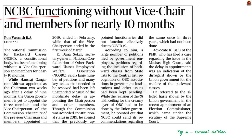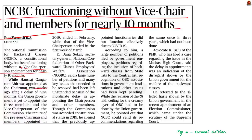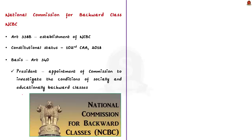The next news article mentions that the National Commission for Backward Classes (NCBC) has been functioning without a vice chairperson and members for nearly 10 months, and the chairman was appointed only two weeks ago after a delay of nine months. In context, when we talk about the National Commission for Scheduled Castes we have Article 338, for Scheduled Tribes we have Article 338A, and for NCBC we have Article 338B. This article states that there shall be a commission for the socially and educationally backward classes — the National Commission for Backward Classes.